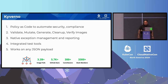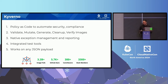Kyverno also has integrated test tools. Chainsaw is a subproject we recently announced, which can be used for end-to-end testing for any Kubernetes controller. And with Kyverno integrations, there's a new Envoy proxy integration to let you verify authorization for Istio and other service meshes.